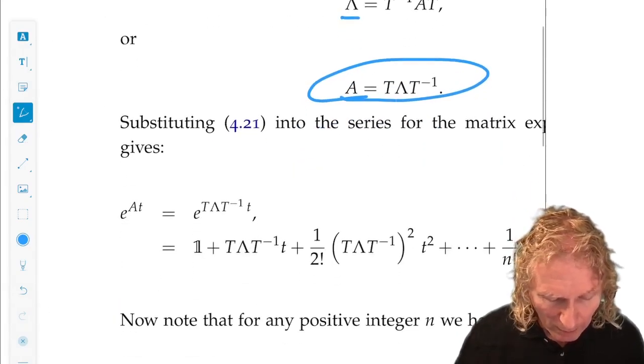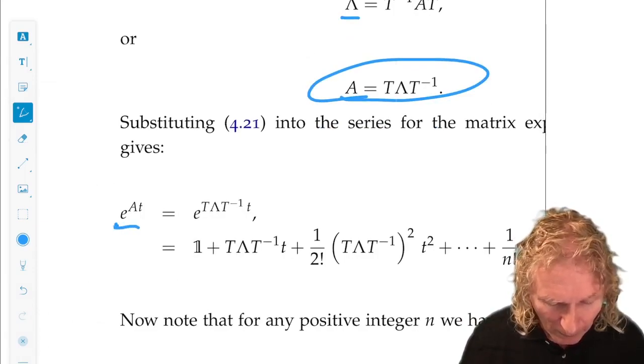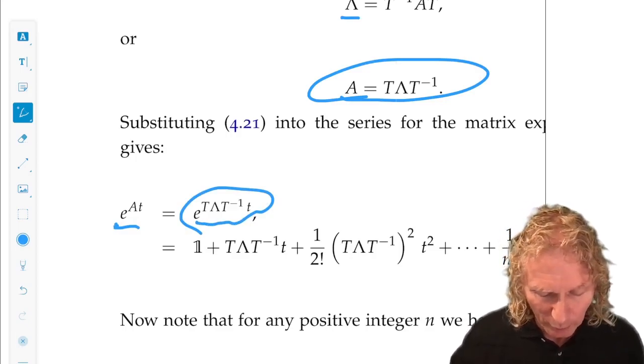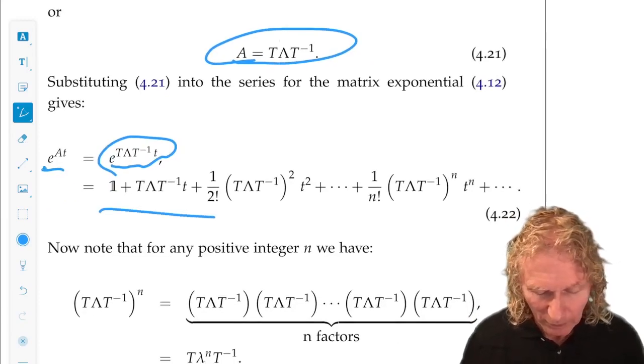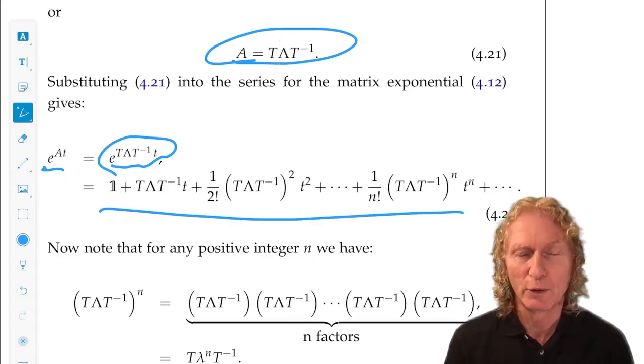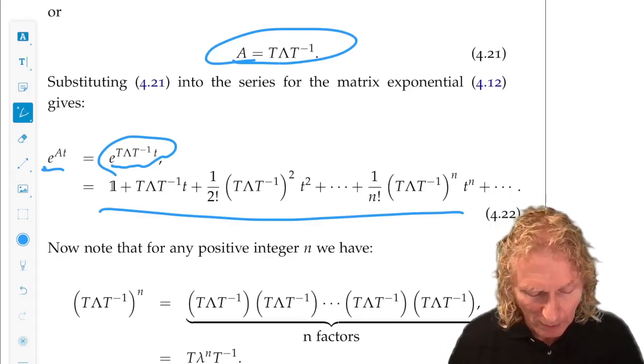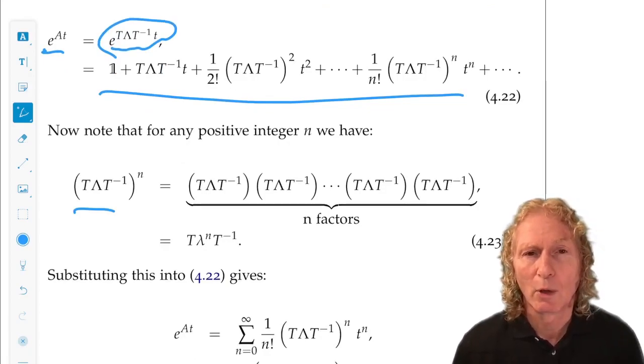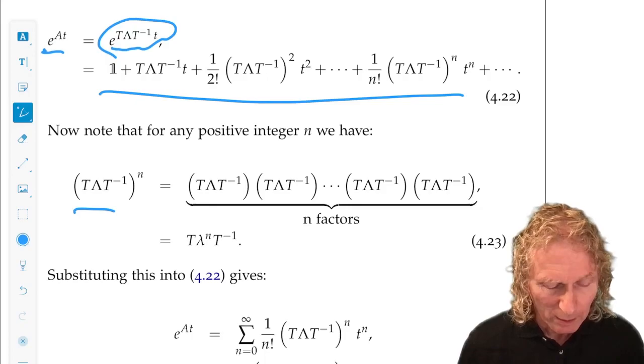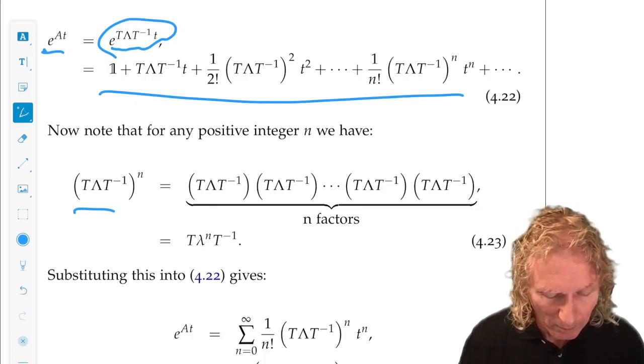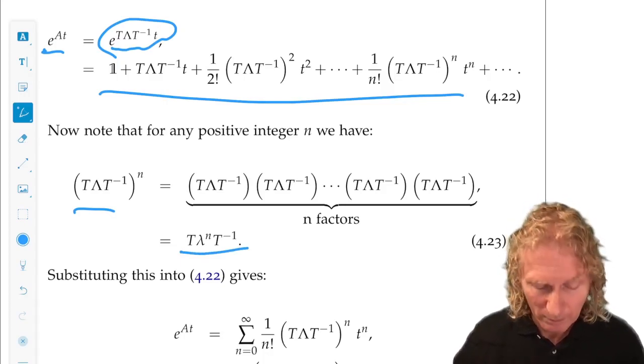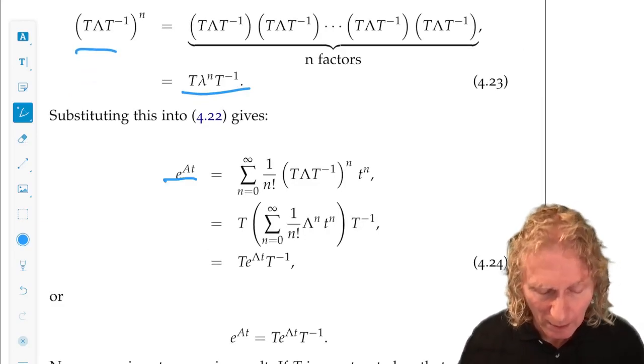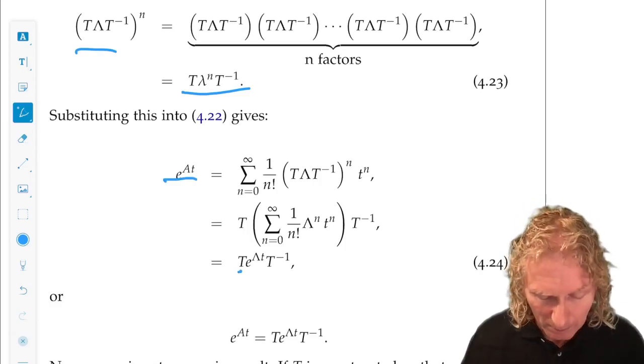Now, for e to the At, let's plug in that definition for A, T lambda T inverse. And we get the exponential series. Instead of A in each term multiplied by A raised to an appropriate power, we have T lambda T inverse. Now, notice this equality here. This happens a lot in matrix algebra. T lambda T lambda T inverse raised to the n is T lambda to the n T inverse. So if you plug that in to the exponential series, you'll see that e to the At is T e to the lambda t T inverse.